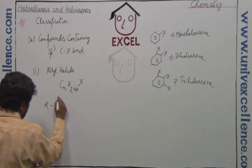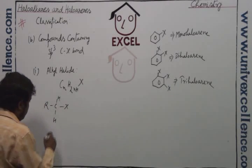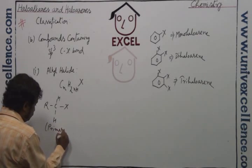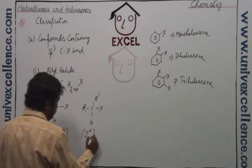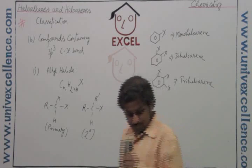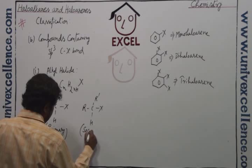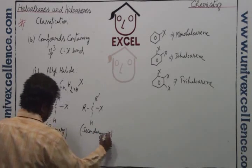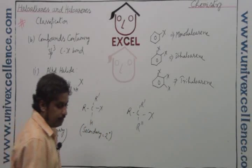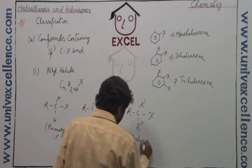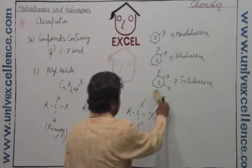Depending on the nature of the carbon bearing the halogen, alkyl halides are subdivided into three types: primary (1°), secondary (2°), and tertiary (3°). In primary alkyl halides, the halogen is attached to a carbon bearing at least two hydrogens (R-CH2-X). In secondary halides, the carbon bears one hydrogen (R-CH(R')-X). In tertiary halides, the carbon bears no hydrogen (R-C(R')(R'')-X).